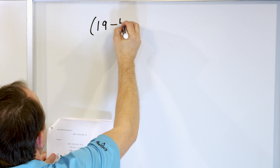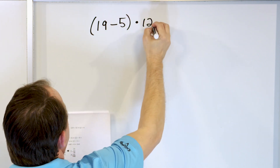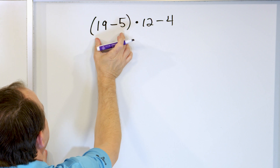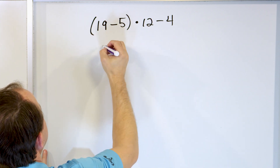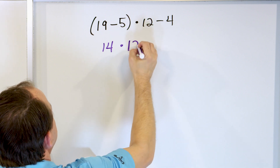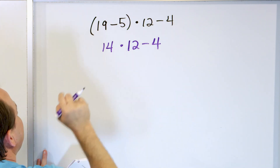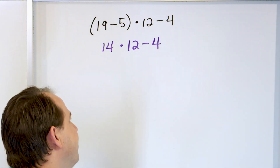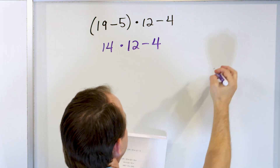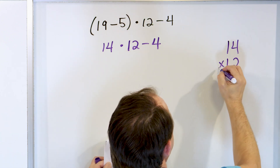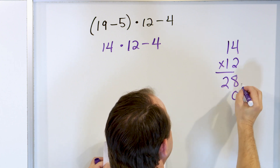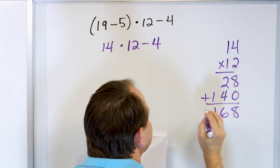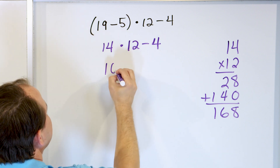Problem 6: parentheses 19 minus 5 close parentheses times 12 minus 4. We ignore everything and focus on the parentheses first. 19 minus 5 is 14; everything else gets copied down. Now we have multiplication and subtraction. Multiply and divide happen before addition and subtraction, so we must multiply first. 14 times 12: 2 times 4 is 8, 2 times 1 is 2, drop a 0, 1 times 4 is 4, 1 times 1 is 1 — we get 168.